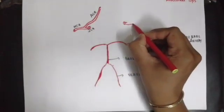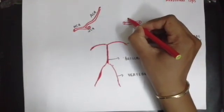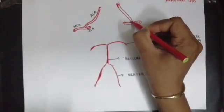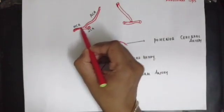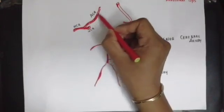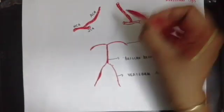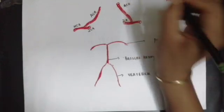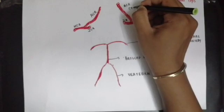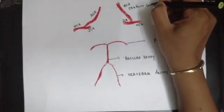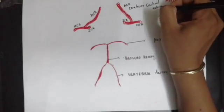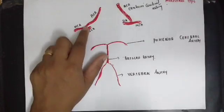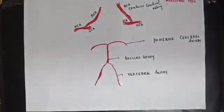On both sides you have the ICA dividing into the ACA (anterior cerebral artery) and MCA (middle cerebral artery). The posterior cerebral artery is a terminal branch of the basilar artery, while the anterior cerebral artery is a branch of the internal carotid artery — this is very important to remember.